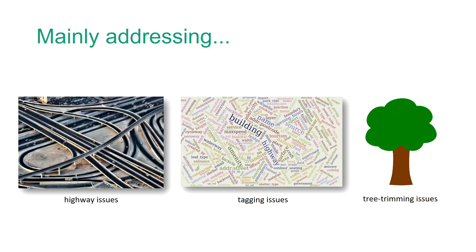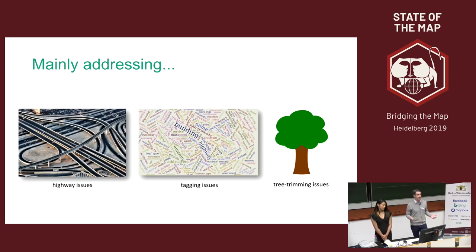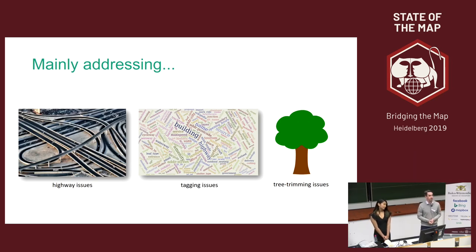Most of the checks we've looked at are related to highway issues, which makes sense given how many groups rely on OpenStreetMap data for routing and navigation, and then there are also general tagging attribution issues. But that's not to mention that there may be very specific one-off checks — like tree mapping that you want to validate. And that's okay, because if you have a very niche area of mapping, you too can create your validation checks and share them with others, so that everyone can benefit from your expertise in a certain area of mapping.